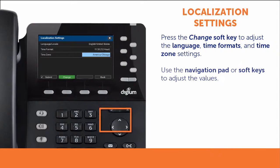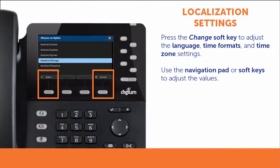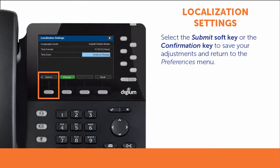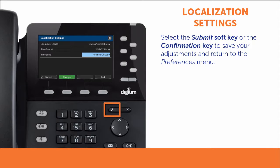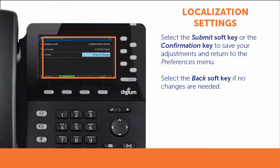Using the navigation pad or the soft keys, you can adjust the values to your specifications. Select the Submit soft key or the confirmation key on the phone to save your adjustments and return to the Preferences menu. If no changes are needed, select the Back soft key to return to the Preferences menu.